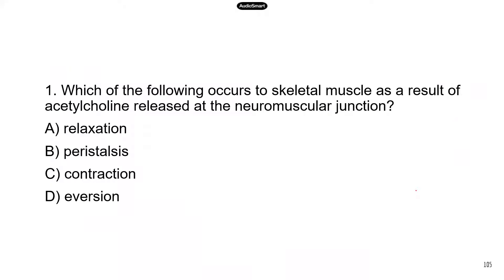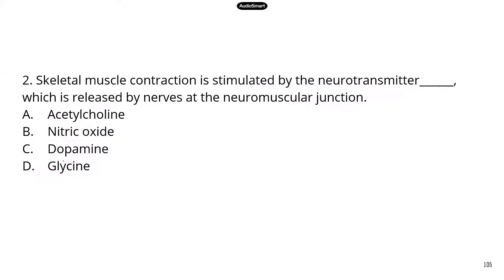Now let's look at some practice problems. Number one: which of the following occurs to skeletal muscle as a result of acetylcholine released at the neuromuscular junction? Acetylcholine is the chemical molecule that motor neurons release to tell the skeletal muscles to contract. Once the skeletal muscle cells receive acetylcholine, they are going to contract. The correct answer is C. Number two: skeletal muscle contraction is stimulated by the neurotransmitter acetylcholine, ACH.